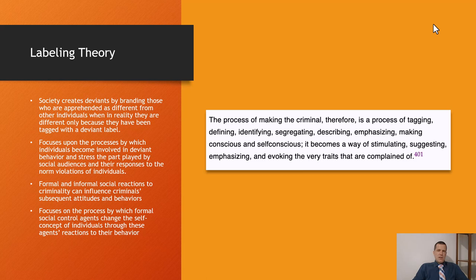What happens if a kid is having problems at home, skipping school, gets picked up and labeled a criminal — does that have future effects on them? What if they start believing it and decide, what's the point, why not go be a criminal? Labeling theory focuses upon the processes by which individuals become involved in deviant behavior and stresses the part played by social audiences and their responses to norm violations of individuals.